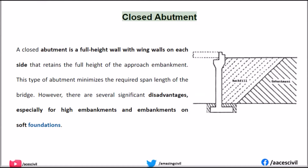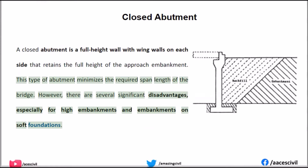A closed abutment is a full-height wall with wing walls on each side that retains the full height of the approach embankment. This type of abutment minimizes the required span length of the bridge. However, there are several significant disadvantages, especially for high embankments and embankments on soft foundations.